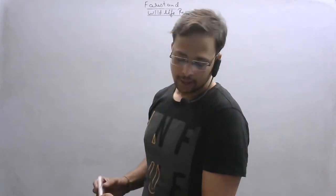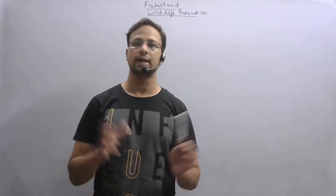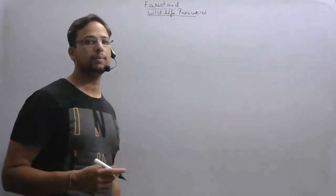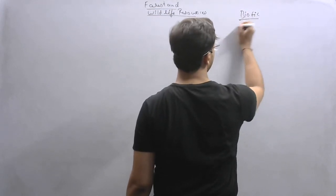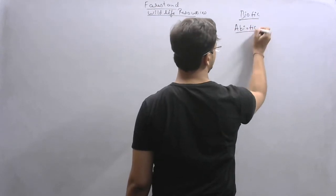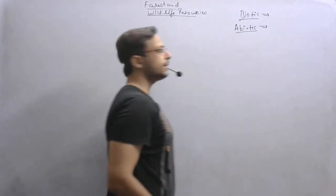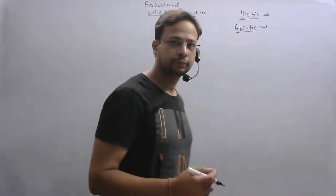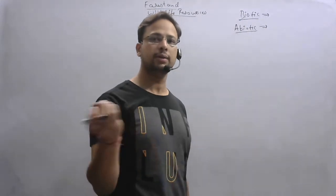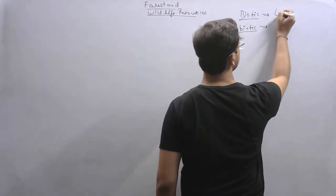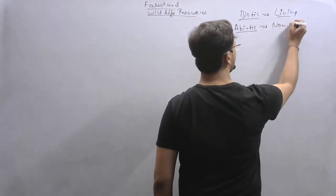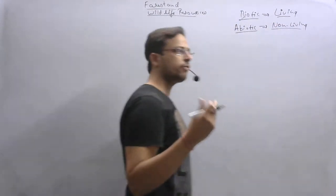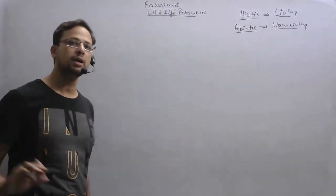Each species on earth is in some manner interdependent on various biotic and abiotic factors in the ecosystem. Biotic means living factors and abiotic means non-living factors. The life of any person depends on both these things, whether they are living or non-living.